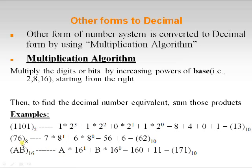For an octal number, follow the same procedure: multiply the digits with source base 8 in increasing powers — 8^0 × 6 + 8^1 × 7 — then add and get the decimal result. For hexadecimal: 16^0 × B + 16^1 × A gives 171 in decimal. This is how we convert binary, octal, or hexadecimal into decimal.